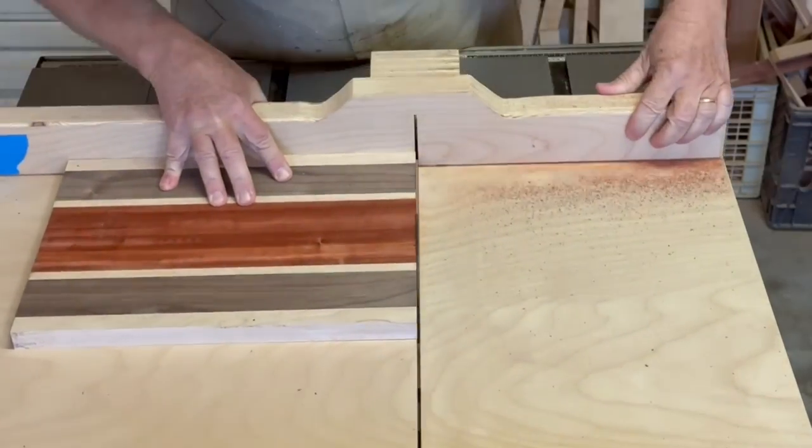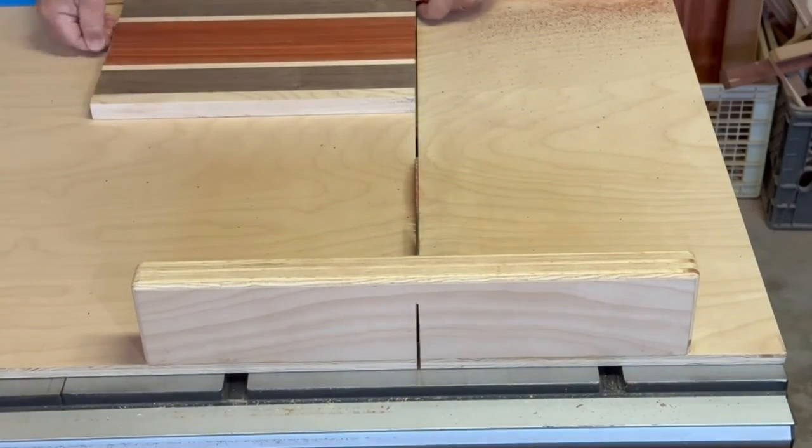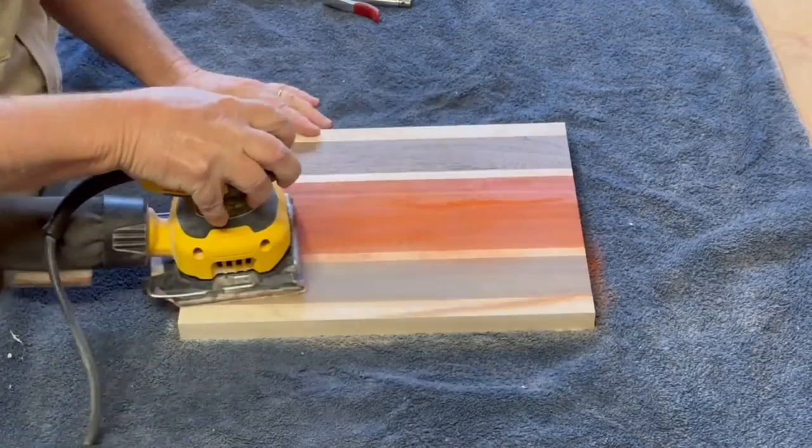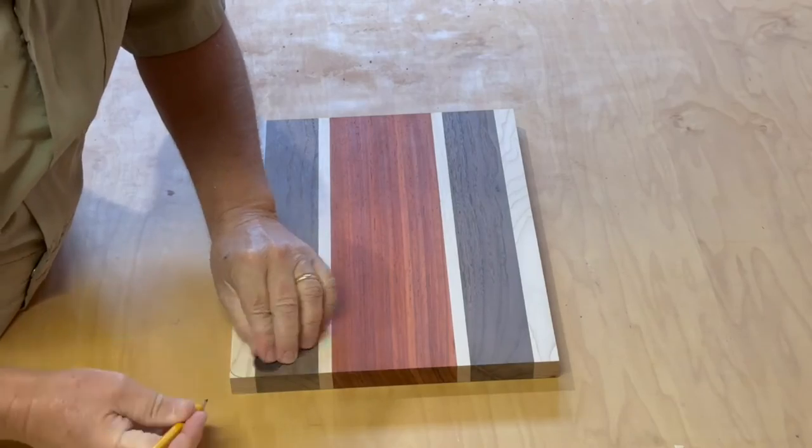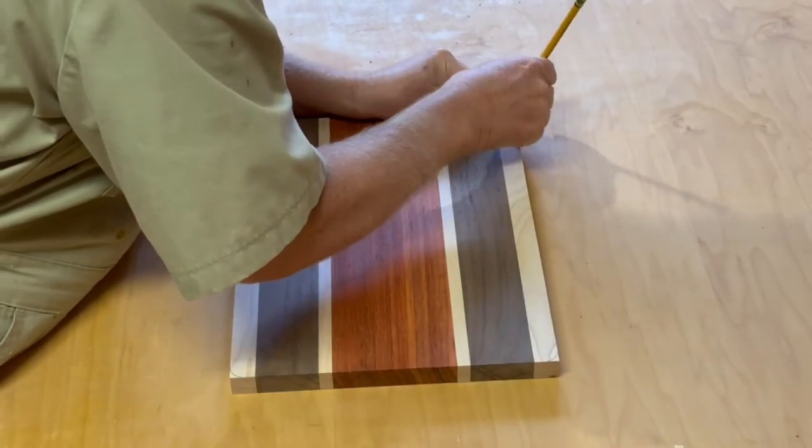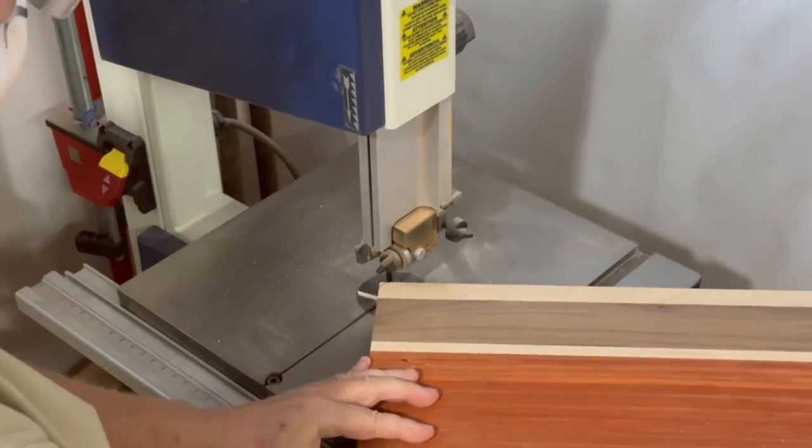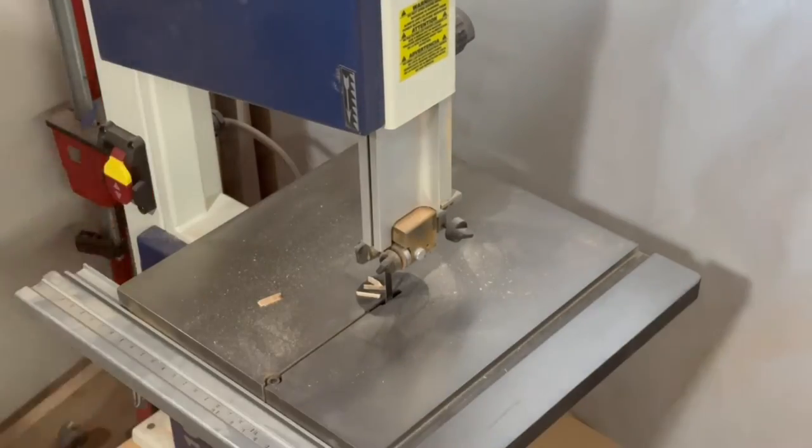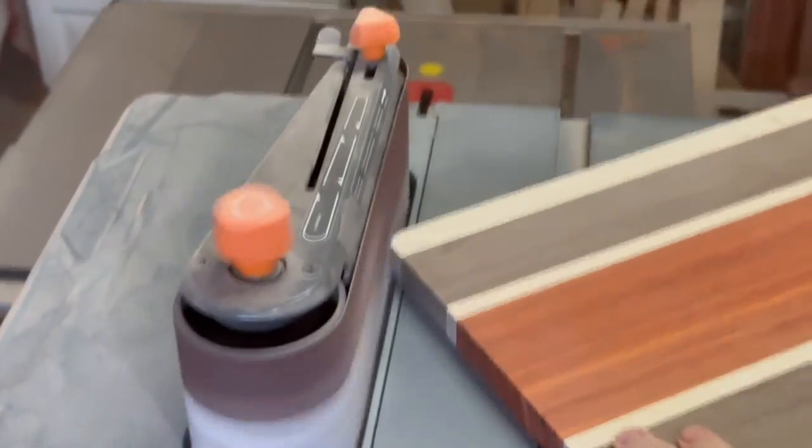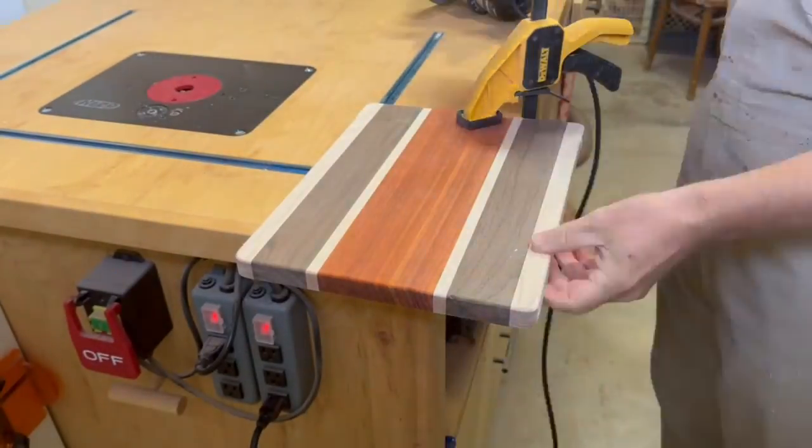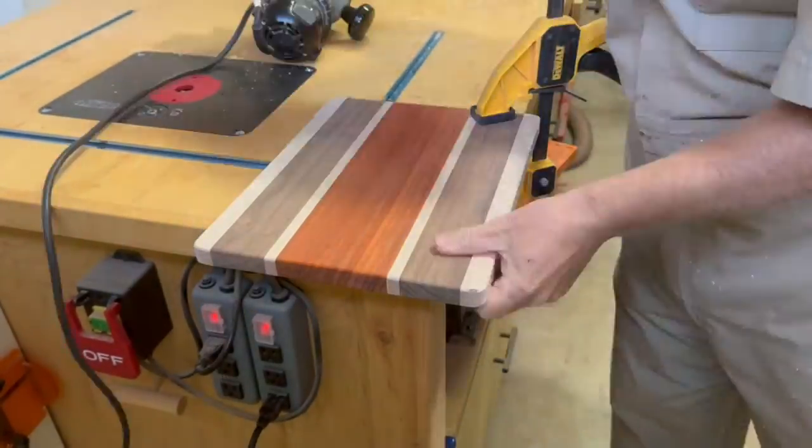Then over to the table saw using a crosscut sled to square up the ends and then I sand it with 120 grit. To round off the corners I marked the radius that I want. I'm just using a washer here. Then I used the band saw to knock off the corners and then the bench sander to really dial in the radius I want on each corner. And with the handheld router then I put a small round over around all the edges on both sides.